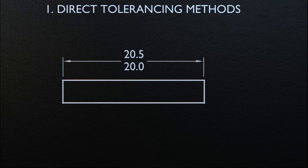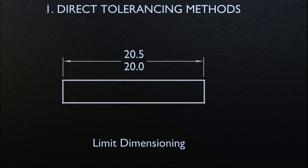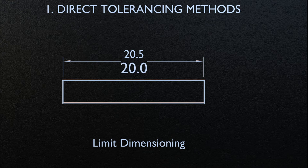Limits and directly applied tolerance values are specified by limit dimensioning and plus and minus tolerancing. Let's begin with limit dimensioning. The high limit — that is the maximum value — is placed above the low limit, which is the minimum value.